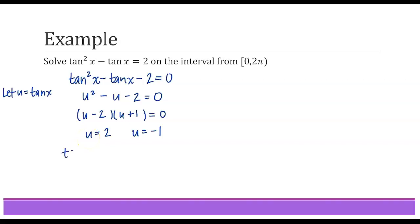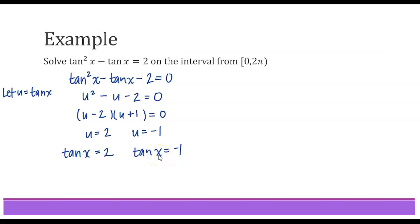We have two smaller trig equations to solve. Starting with tangent x equals negative 1: the reference angle is pi over 4 and tangent is negative in quadrants 2 and 4, so the two angles are x equals 3 pi over 4 and 7 pi over 4.